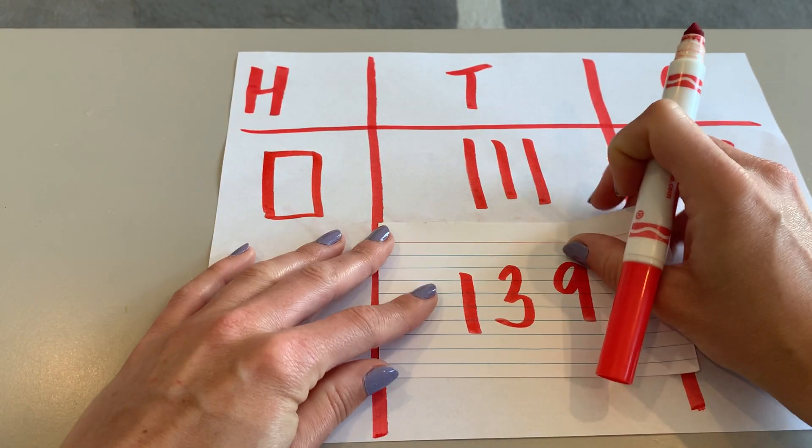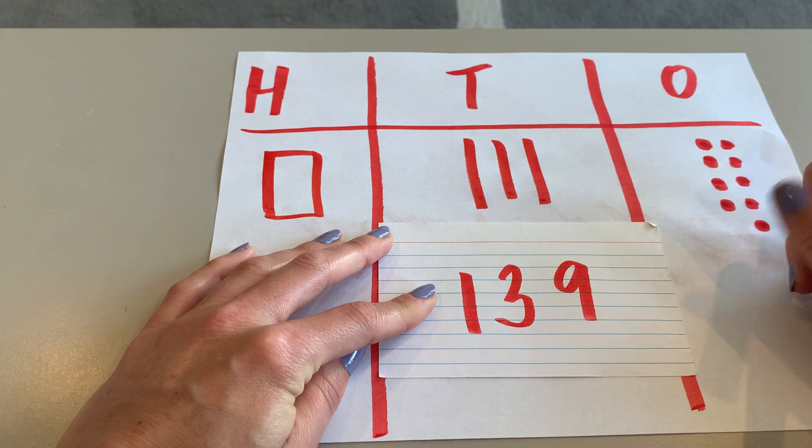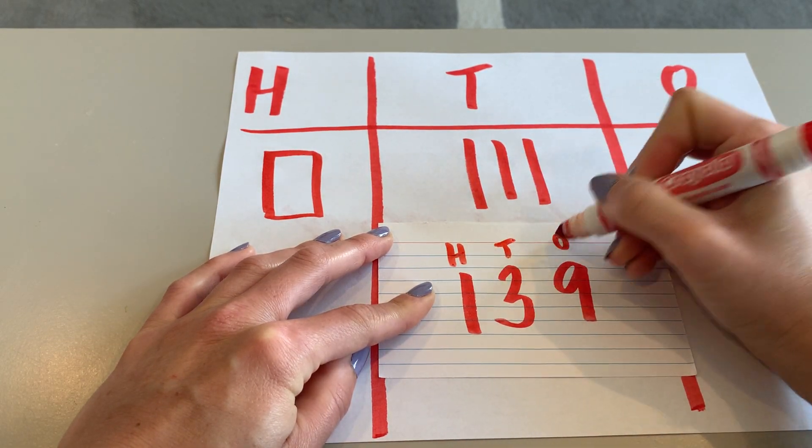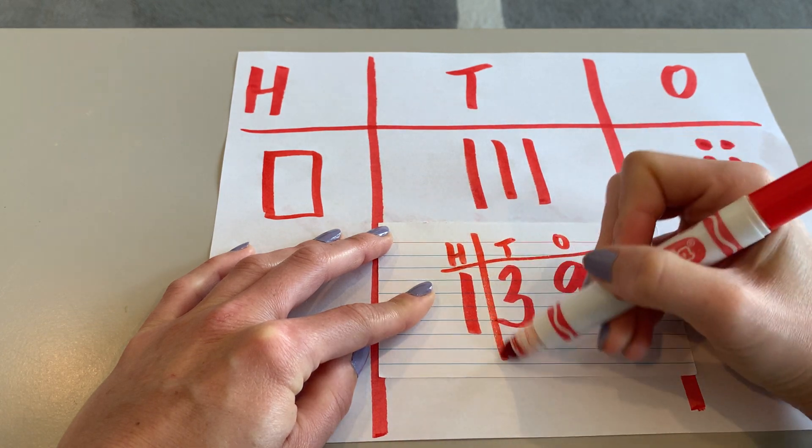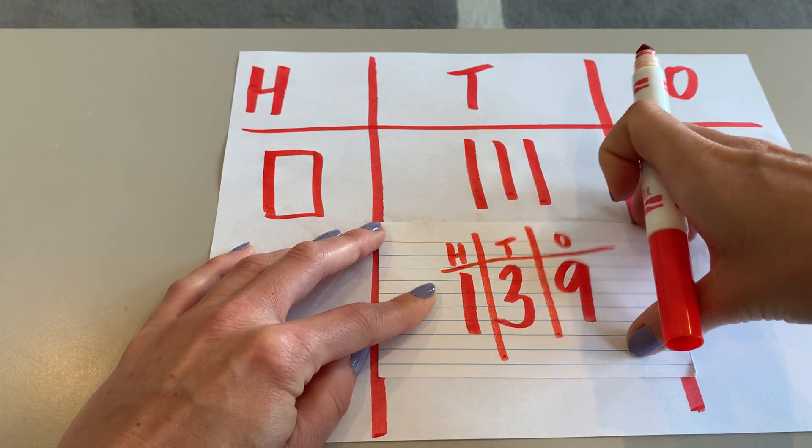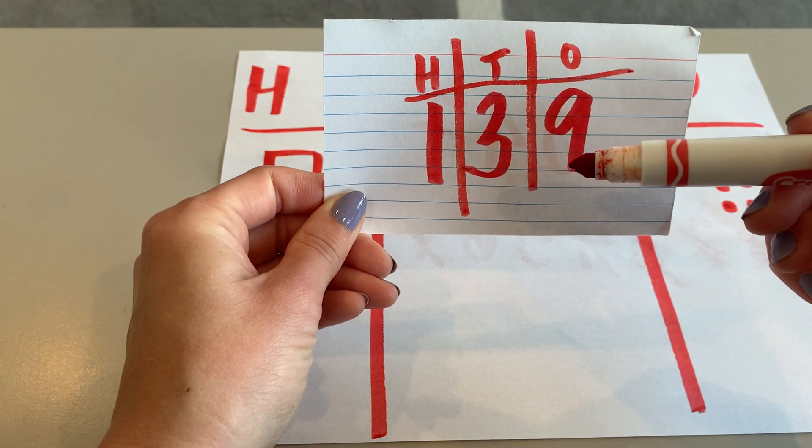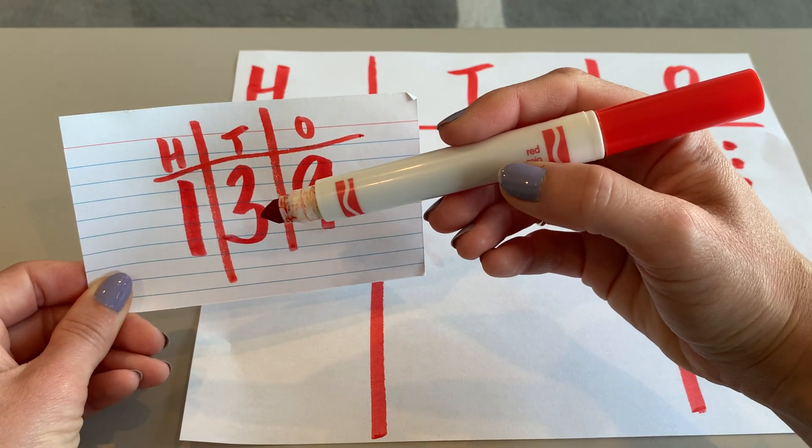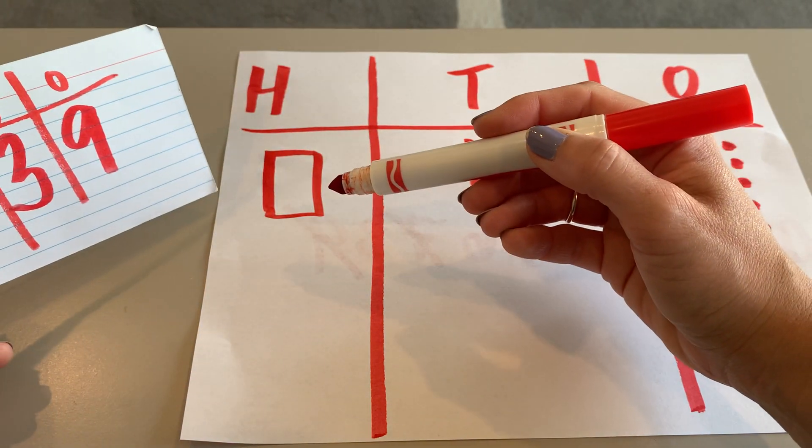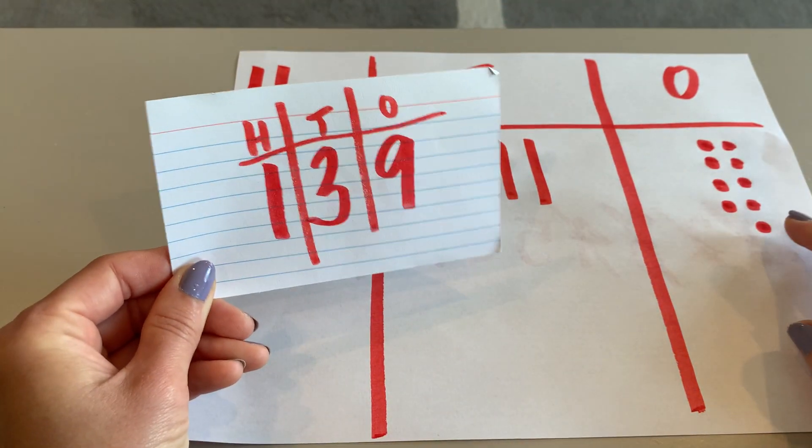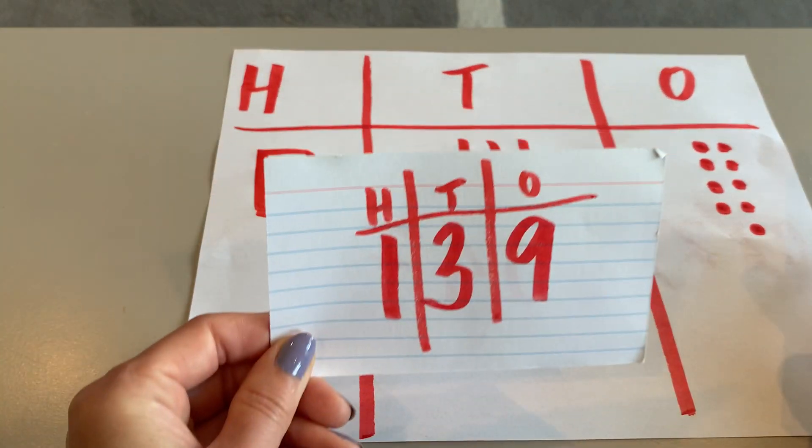Now, if this is feeling confusing to you, something I like to do is sometimes I even draw my HTO on top of my number like this. That tells me I should have nine ones units in the ones, three tens rods in the tens, and one hundred in the hundreds. It kind of helps you look at it the way an HTO place value chart would look.